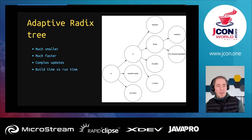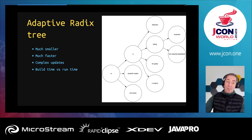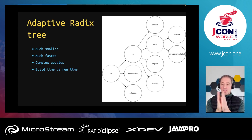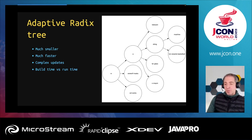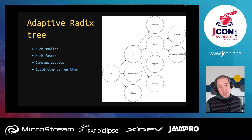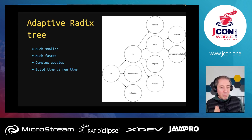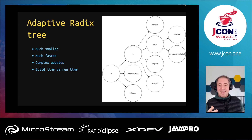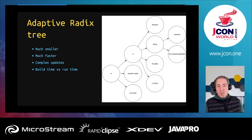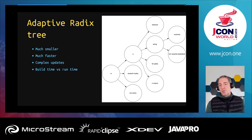The adaptive radix tree is smaller and faster, but updates are more complex — instead of just adding a node, you may need to split a node. But you can still do updates, which is a good thing. This illustrates a classic trade-off: building the data structure is more expensive at build time, but it becomes faster at runtime — a very common topic in search and suggestions.